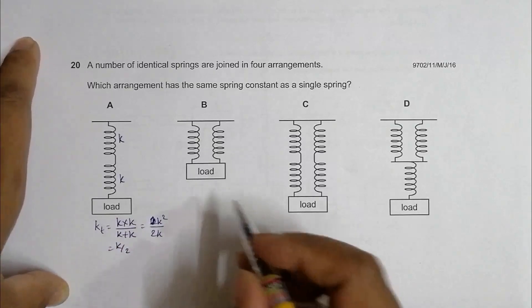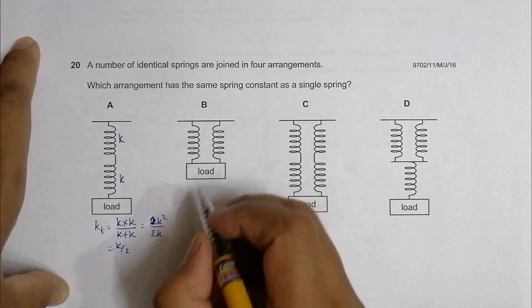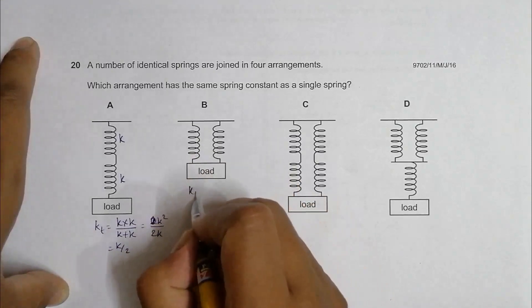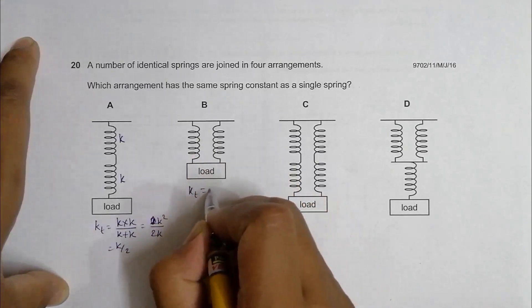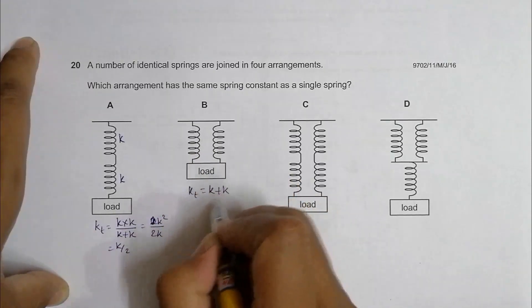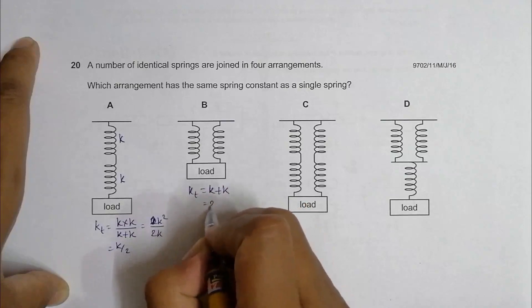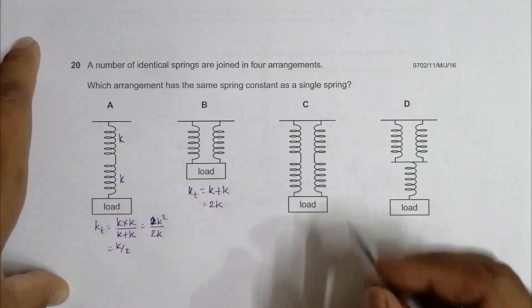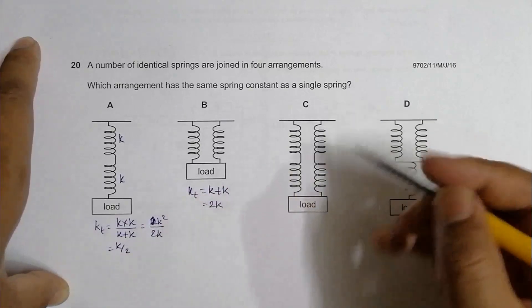In arrangement B, the springs are in parallel, so k_total equals k plus k, which equals 2k. Again, not equal to k.